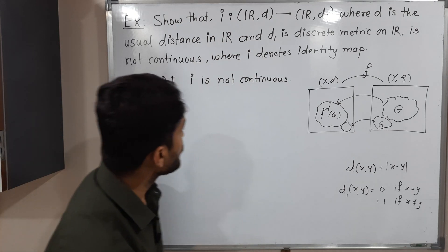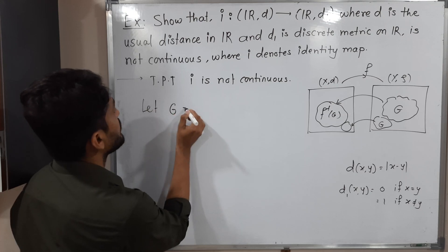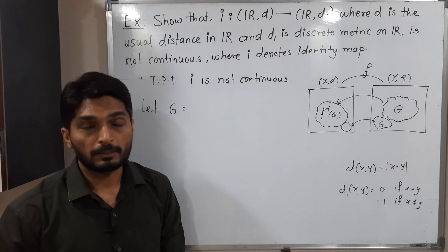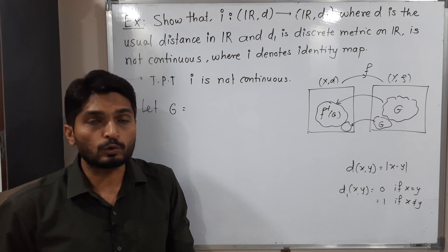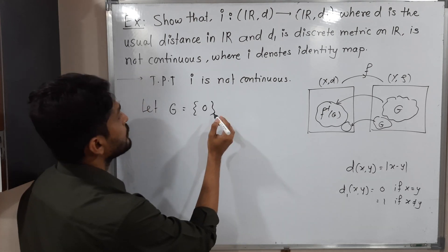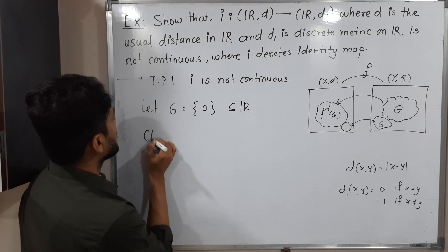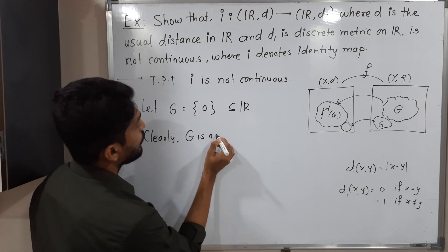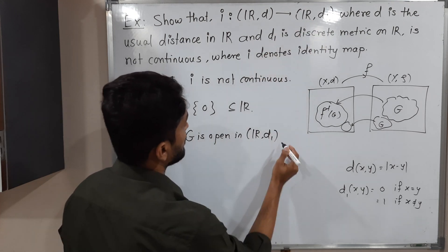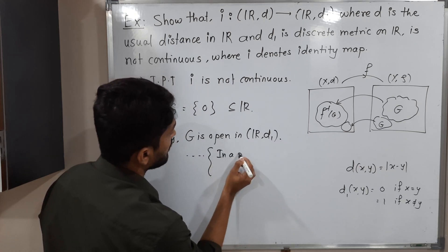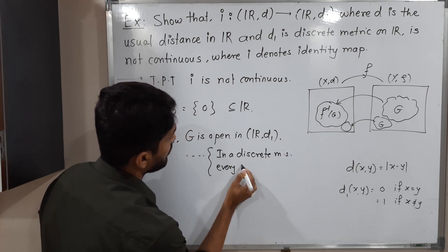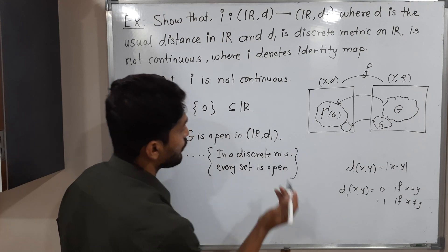Let us take one set. Let G equal the singleton {0}, which is a subset of R. Now, in a discrete metric space every set is open, so clearly G is open in Rd1.